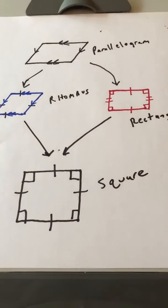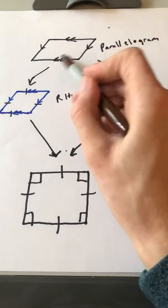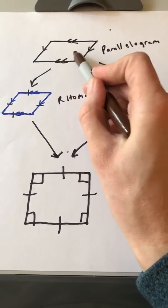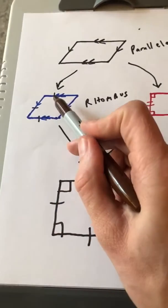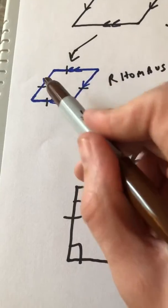Reviewing parallelograms and then we're going to talk about two additional types of parallelograms today. We've talked about the parallelogram. Again, opposite sides are parallel. And we've talked about the rhombus being a special type of parallelogram in which all four sides are equal.